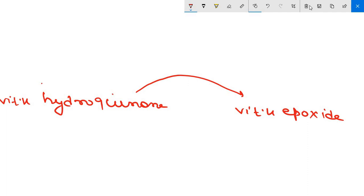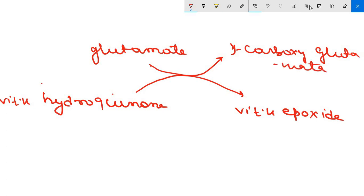And during this oxidation, your glutamate residues of those clotting factors 2, 7, 9 and 10 is carboxylated at its gamma position and form gamma carboxyglutamate residues. And the enzyme here is known as vitamin K epoxidase.